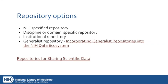If there's no NIH-required repository and no institutional or domain-specific repository that meets your data's needs, there are generalist repositories that will generally accept data from a variety of disciplines and a range of data types. In the next couple of slides, I'm going to go over some examples of these different kinds of repositories.